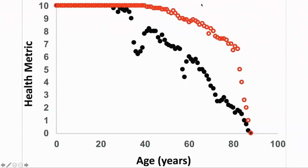Professor Caberlin proposes that there should be a standard 10-point scale of health, similar to that for frailty. At some point, we could define that Healthspan has ended, or more usefully, we can calculate the area under the curve.